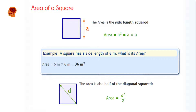Let's calculate the area of a square. For example, a square has a side length of 6 meters. What is its area? From the formula, Area = length × length. Since the length is 6 meters, the area becomes 6 meters × 6 meters, which gives you 36 meters squared.